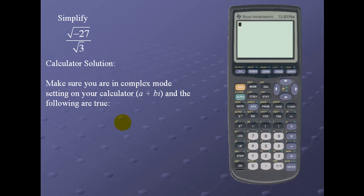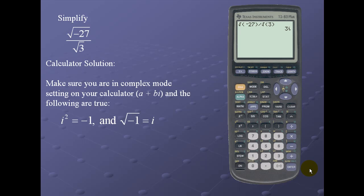Let's take a look at the calculator solution. Since we already have the correct settings, I simply enter the expression: the square root of -27, being mindful to close off the parenthesis, divided by the square root of 3, for a result of 3i.